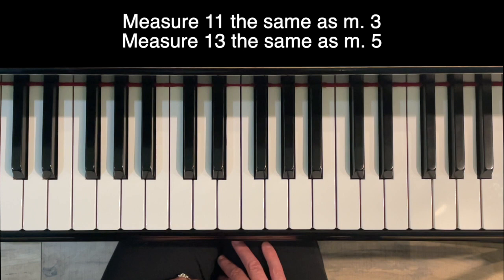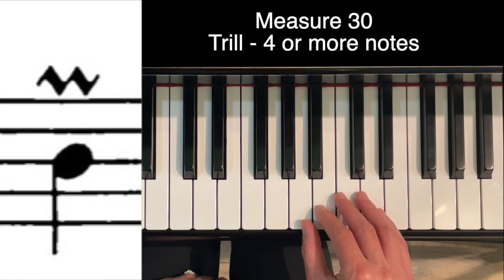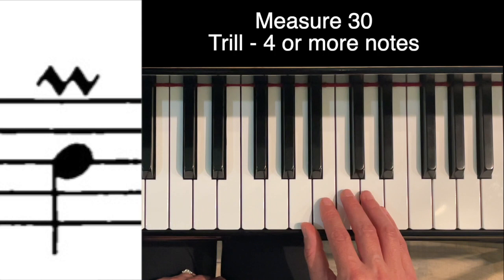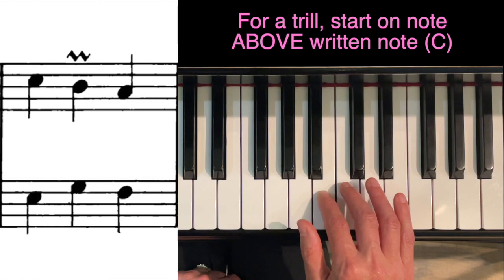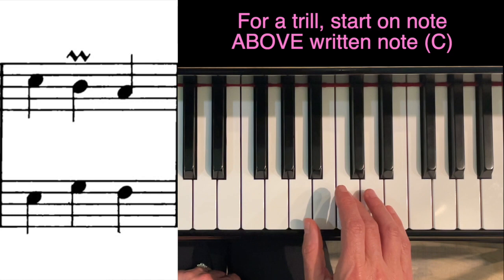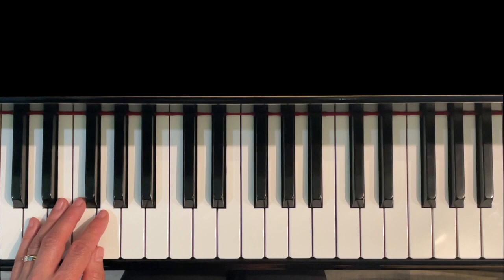Then moving forward, measure 11 we have the same as measure three. Measure 13 we have the same as measure five. So our final ornament written out in this piece is a trill, which happens in measure 30. It's a little squiggly line, no slash through it this time, so that means this one is going to be four or more notes—just depends on your mood and how you'd like to play this one. The written note is B, but the symbol means to start on the note above, so we're going to play four notes and we're going to start on a C.